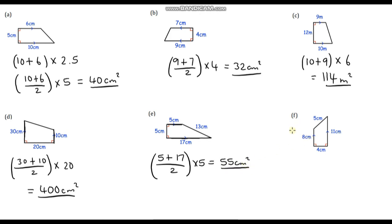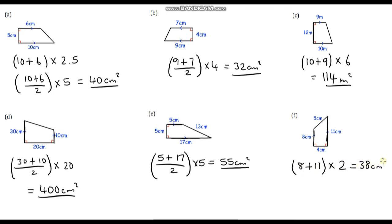Okay, last but not least, question F. Our parallel sides are 8 and 11. I'm going to multiply by half our height because we've got an even height, so I multiply by 2. So 8 plus 11 is 19, and 19 times 2 is 38 centimetres squared.